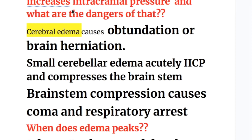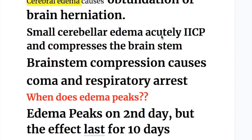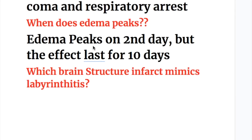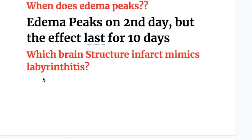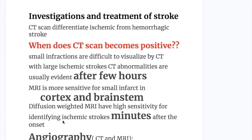Cerebral edema causes obtundation or brain herniation. Small cerebellar edema acutely increases intracranial pressure and compresses the brain stem, causing coma and respiratory arrest. Edema peaks on the second day but the effect lasts for 10 days. Cerebellar infarction presents with posterior headache, vomiting, and vertigo, mimicking labyrinthitis.